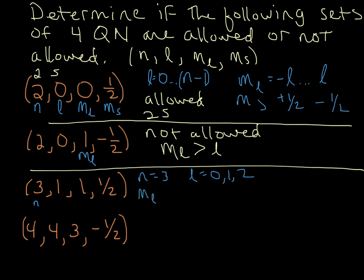M sub l, for l equals one, it can be minus one, zero, and one, so clearly that's allowed. And then when we look at m sub s, it's positive one-half, so this set is allowed. And think about what type of orbital that is. So you use n and l. So l equals one, remember that's a p orbital, so this is a 3p orbital. So it's one of the three p orbitals.